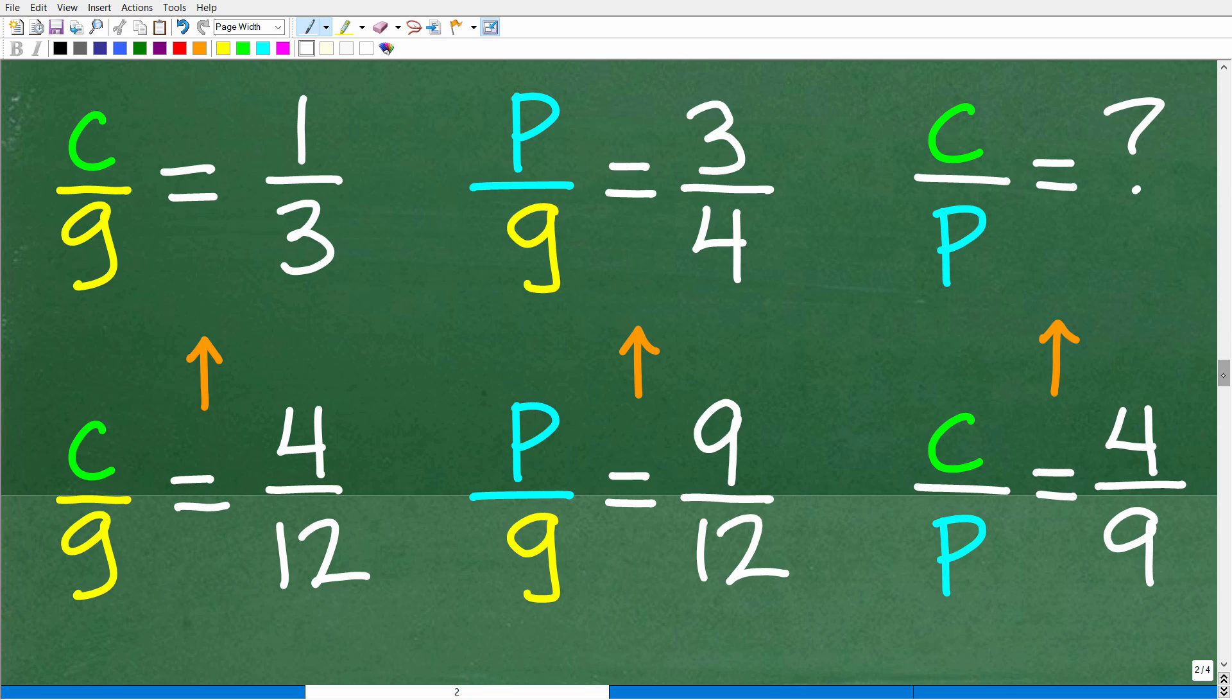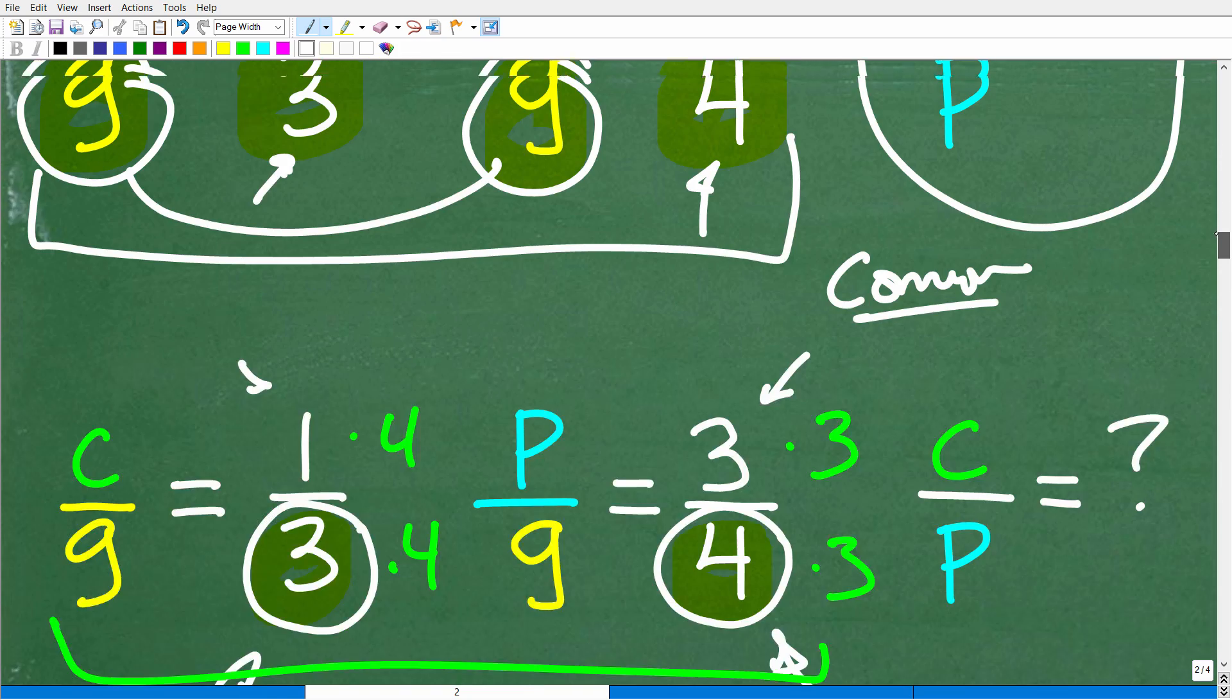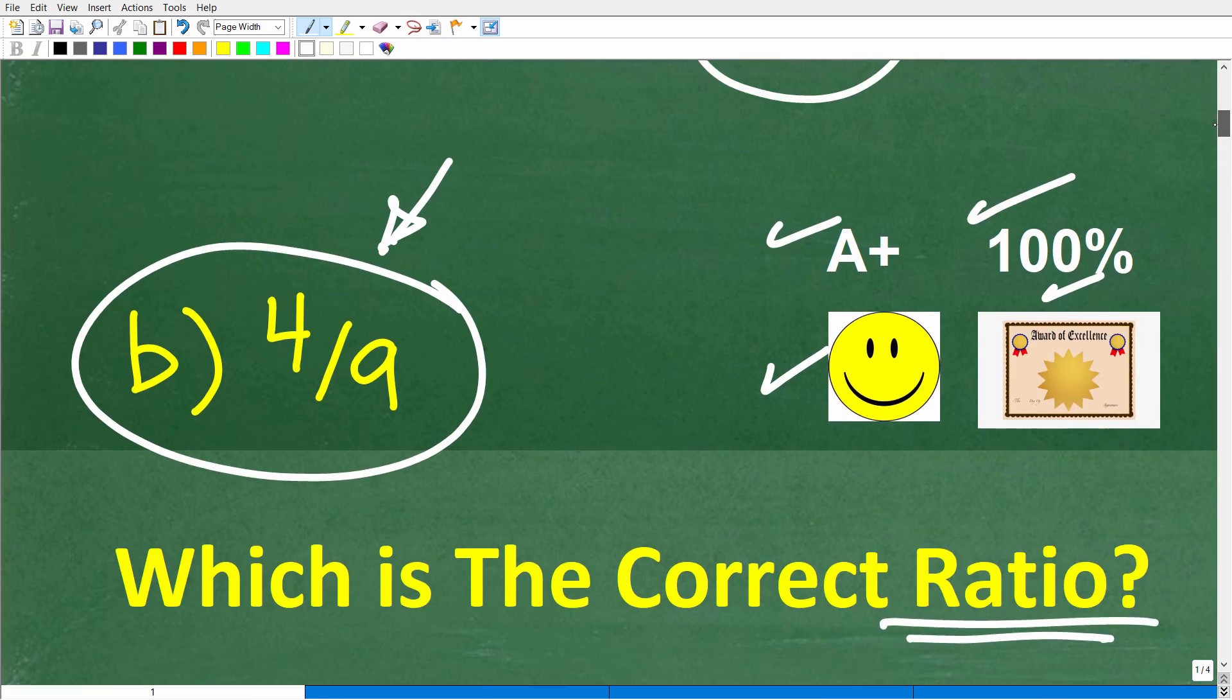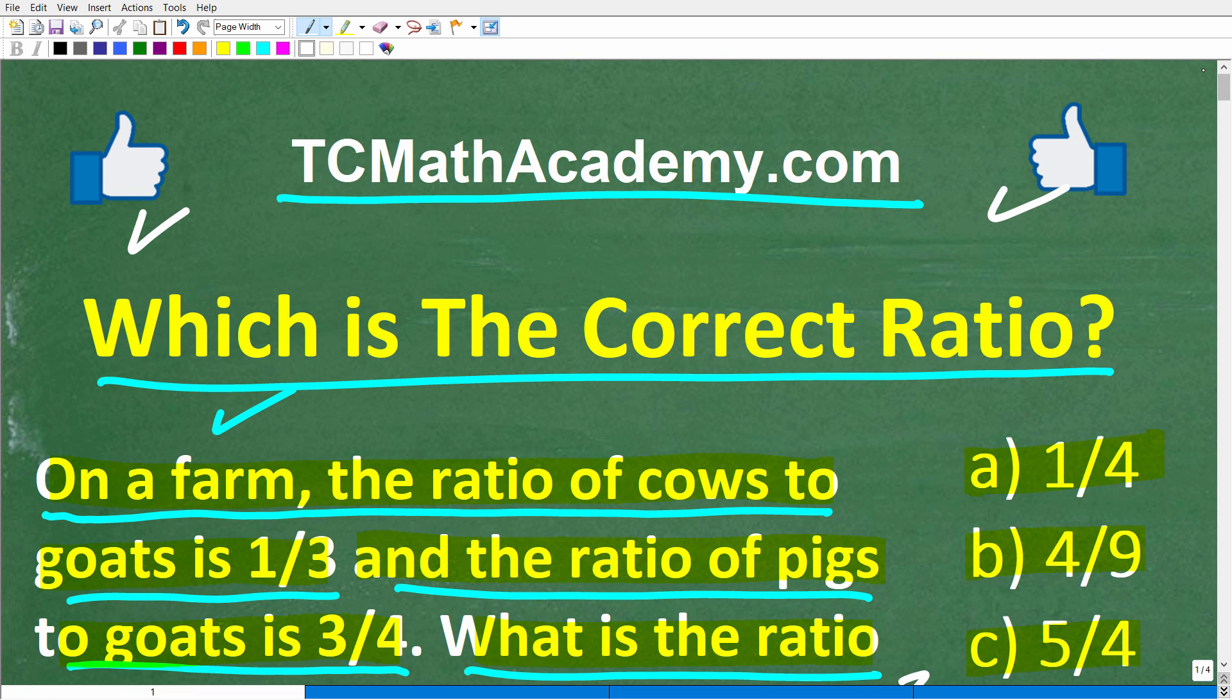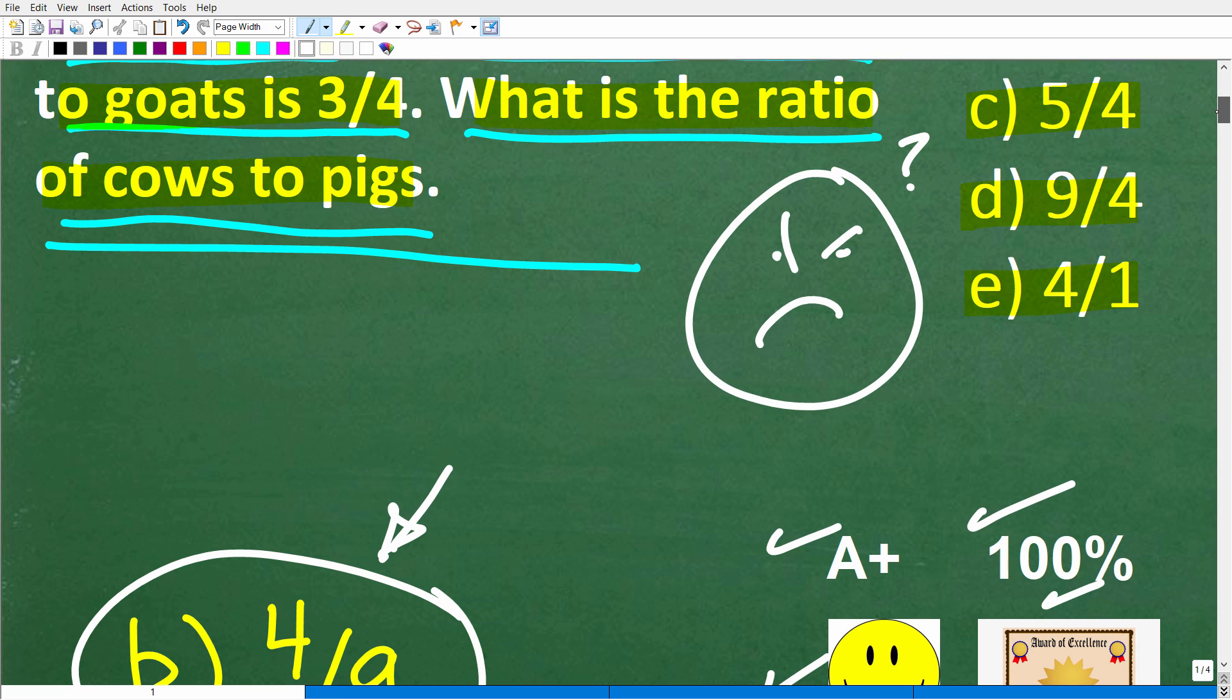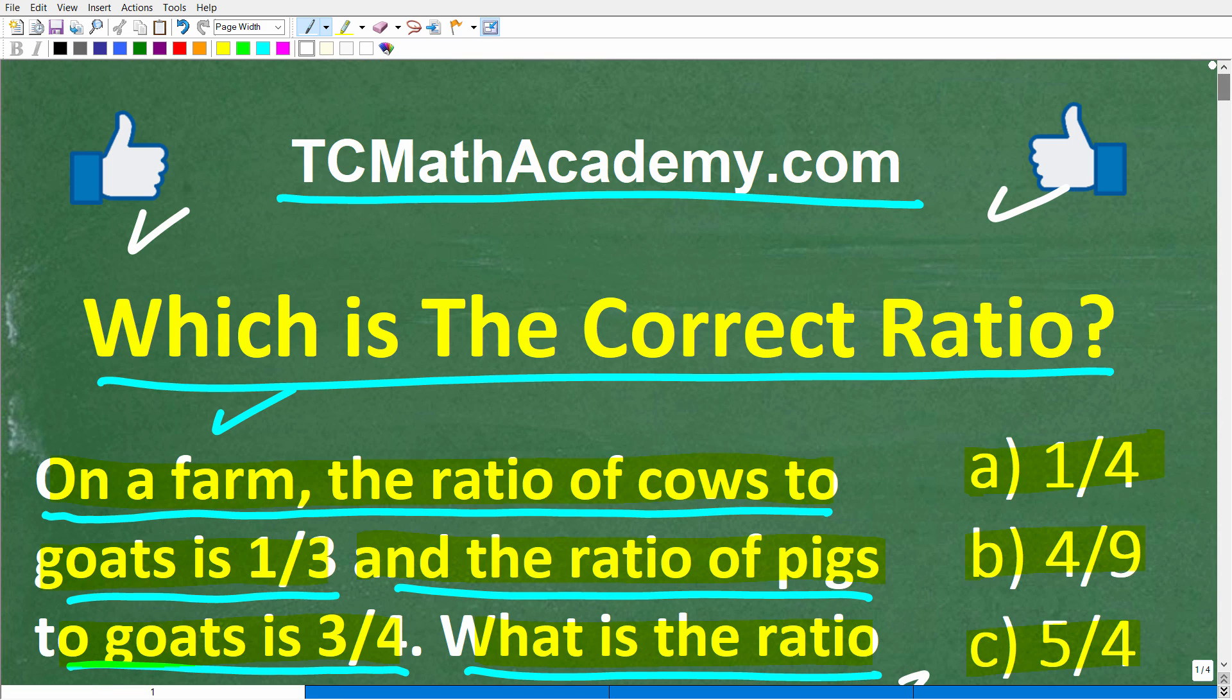So hopefully this makes sense. This is a type of problem that those of you that have to still take tests in life will definitely encounter. This type of problem would likely be on an SAT or ACT or some sort of college admissions exam, or maybe graduate school. So a little bit trickier problem than a regular run-of-the-mill ratio problem. But don't feel bad if you got this wrong. The main idea here is that you learn something. And if that's the case, don't forget to like and subscribe. And with that being said, I definitely wish you all the best in your math adventures. Thank you for your time and have a great day.